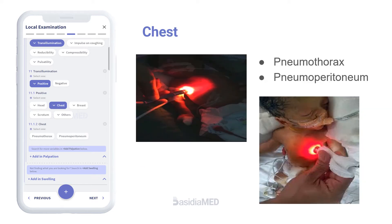Chest infections, especially in infants, with cavities containing edematous fluid show transillumination. Some examples are pneumothorax and pneumoperitoneum.